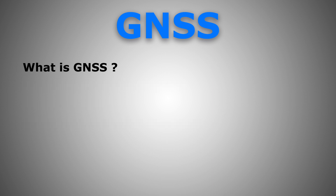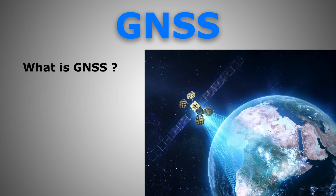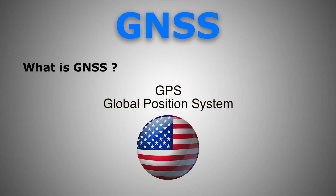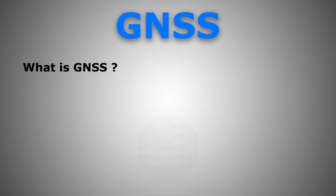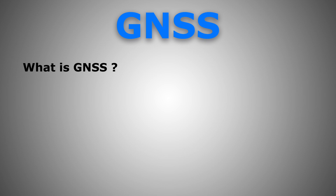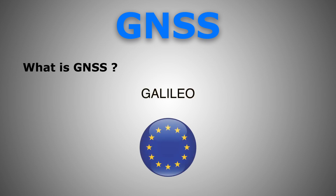First things first — what is GNSS? GNSS is a generic term to describe Global Navigation Satellite System. There is more than just one GNSS. You may have heard the term GPS or NAVSTAR. GPS is owned and maintained by the U.S. military, which means it's up to them where, when, and how accurate it is. There is also GLONASS, owned by the Russian government, and the Europeans have their own system called Galileo.